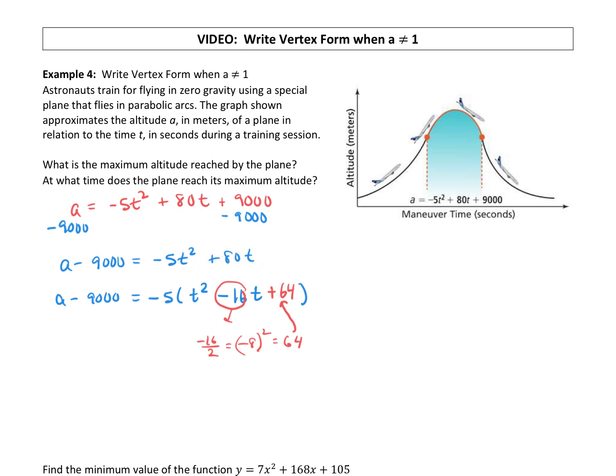So when we come over here to add this to the other side of our equation to keep it balanced, we're not adding in a 64, we're adding in a 5 times 64, excuse me, negative 5 times 64. So whatever we factored out gets multiplied with that value we're adding in to complete the square, and that's what we counterbalance with.